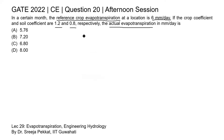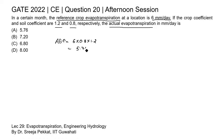In this question, we have the values of crop coefficient and soil coefficient. So, Actual ET = 6 mm/day × 0.8 (soil coefficient) × 1.2 (crop coefficient) = 5.76 mm per day. This value of 5.76 mm per day is given in option A, so option A is the correct answer.